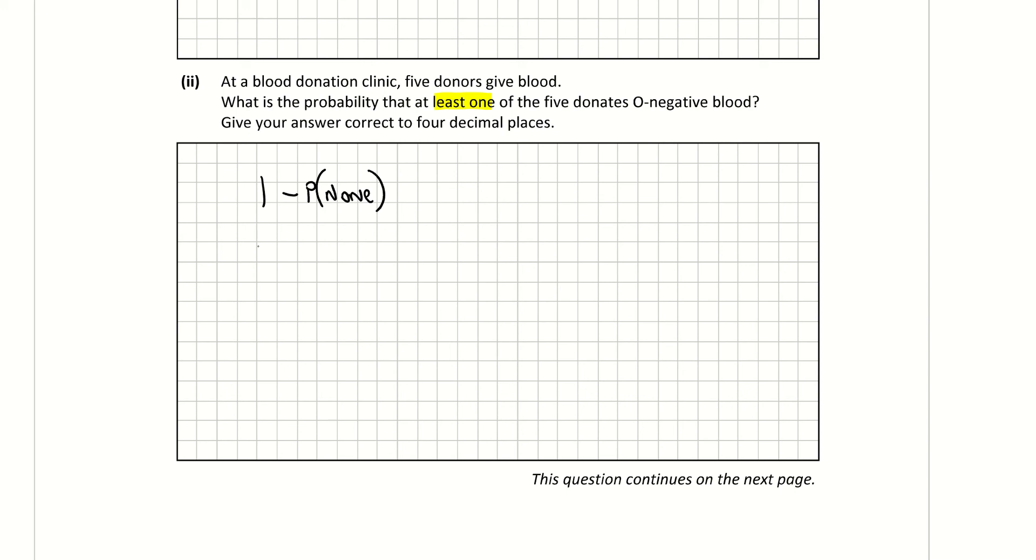And in order to do that, I'm going 1 subtract the probability of none of them. Well, what's the probability of none of them? So it's 92% would be not O negative. So that's 92 out of 100 or 0.92. And it has to happen 5 times for none of them. So I would be putting that to the power of 5 because I want 5 of them not to be O negative there.